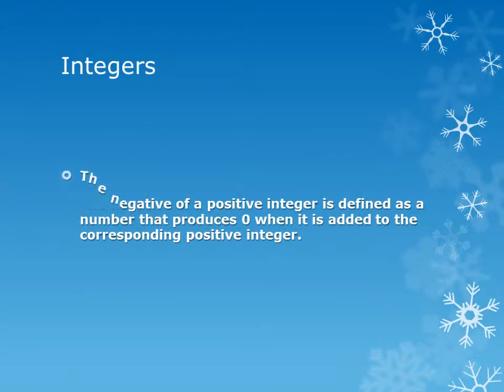Integers. The negative of a positive integer is defined as a number that produces 0 when it is added to the corresponding positive integer.